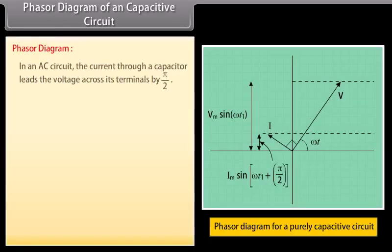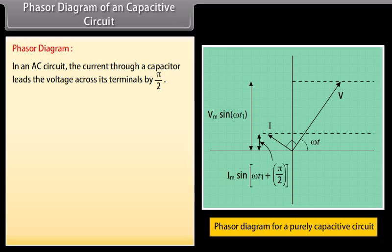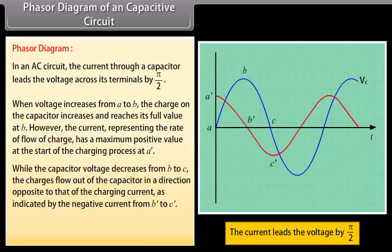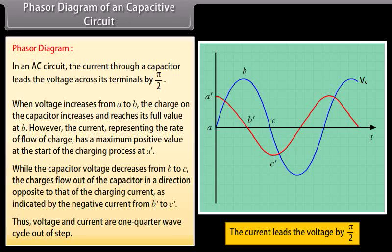Phasor diagram of a capacitive circuit: In an AC circuit, the current through a capacitor leads the voltage across its terminals by π/2. When voltage increases from A to B, the charge on the capacitor increases and reaches its full value at B. However, the current, representing the rate of flow of charge, has a maximum positive value at A, and while the capacitor voltage decreases from B to C, voltage and current are one quarter wave cycle out of step.